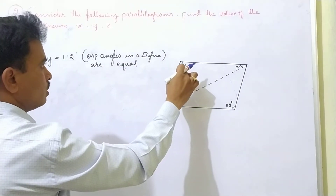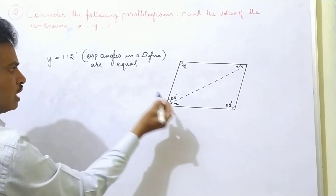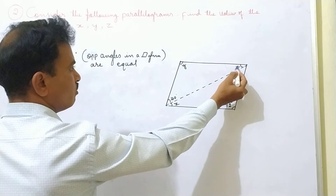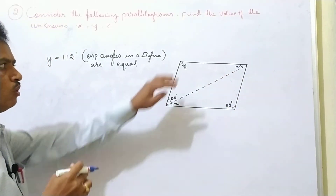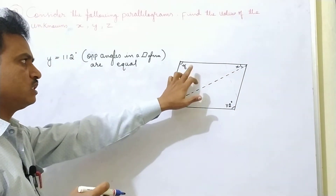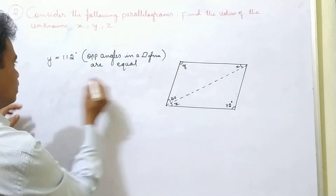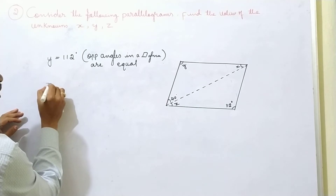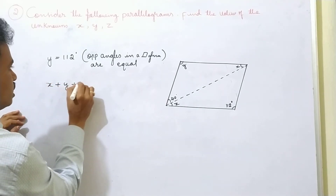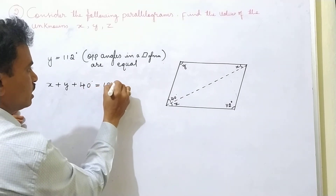So when Y is equal to 112, then this angle is 40 degrees, then we can find X by adding all the three interior angles of this triangle equal to 180 degrees. So: X plus Y plus 40 degrees is equal to 180 degrees.